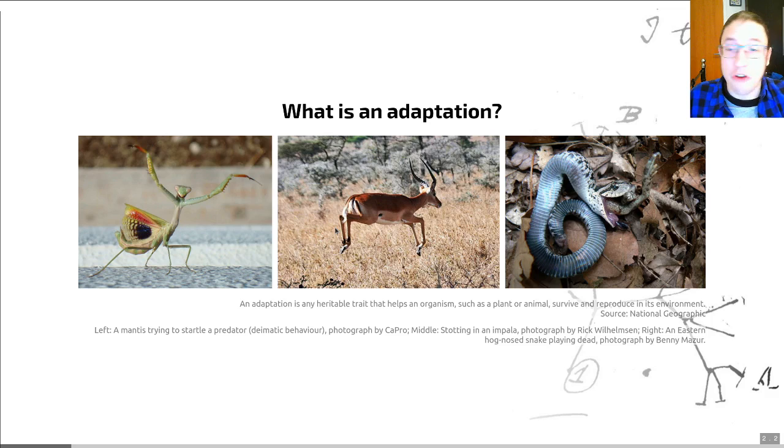The third example is thanatosis, also the name of a metal band, and this is just another word for playing dead. So if you play dead you can avoid predation because many predators will go for living food. Similarly there are some species which use thanatosis as a way to lure in their prey. Both of those are examples of adaptations although towards different ends and purposes.